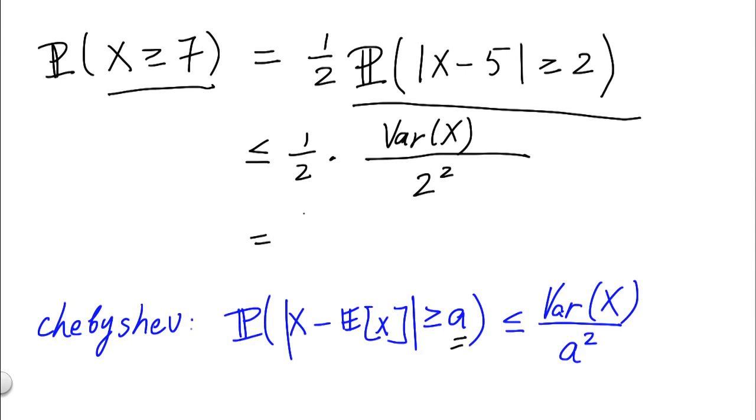This gives us 1/8 times the variance of x, which we know is 10 times the variance of a uniform random variable between 0 and 1, which is 1/12. And that gives us 5 over 48.